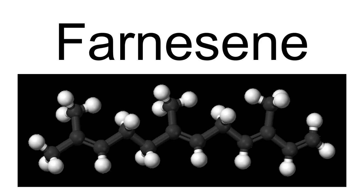The alpha form can exist as four stereoisomers that differ about the geometry of two of its three internal double bonds. The stereoisomers of the third internal double bond are identical. The beta-isomer exists as two stereoisomers about the geometry of its central double bond.